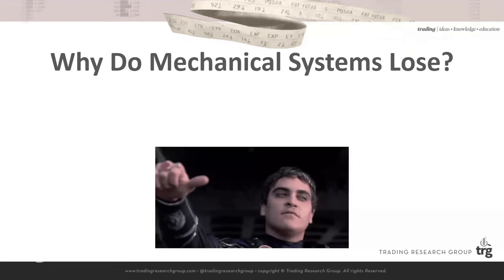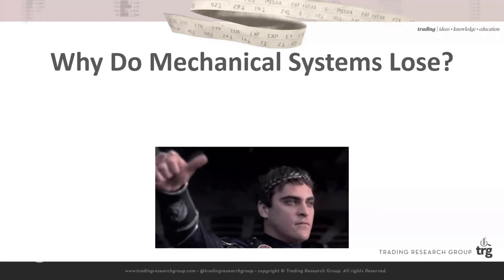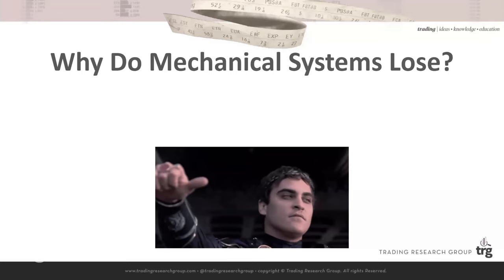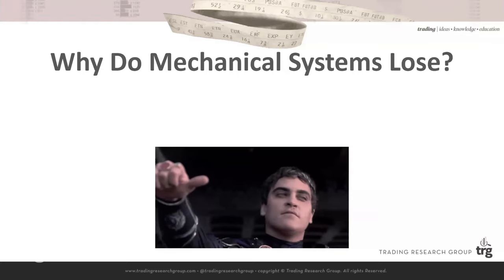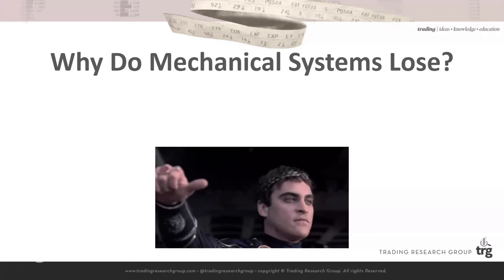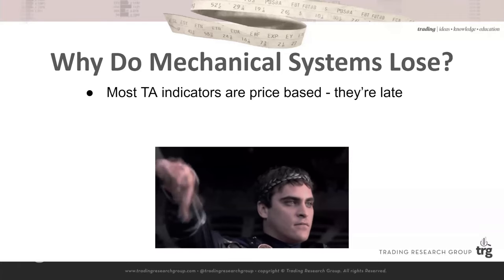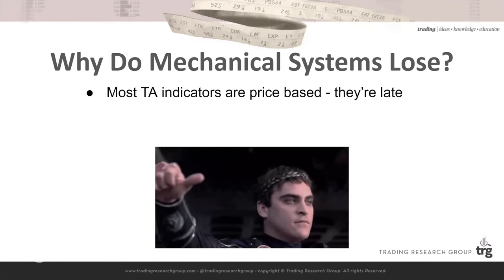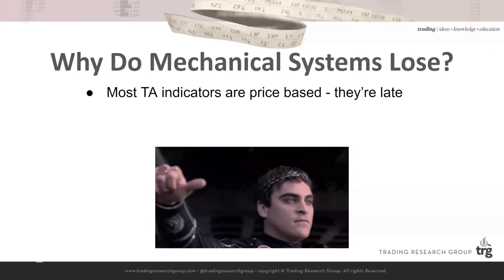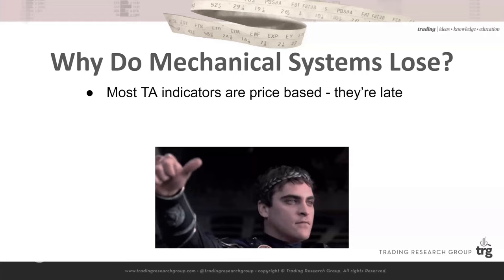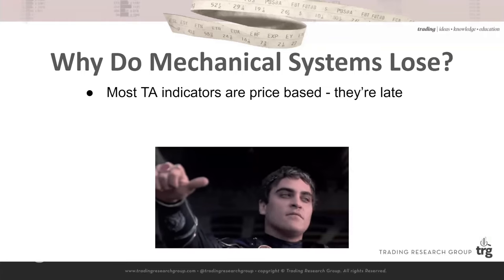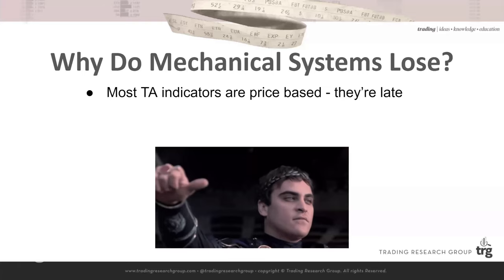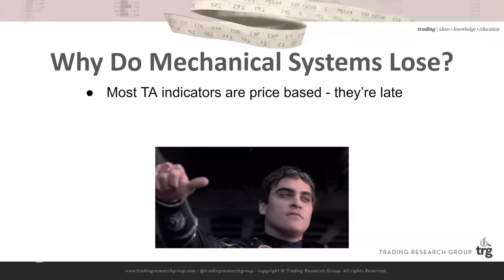Let's talk about the elephant in the room: why is it that mechanical systems always lose? Brainless, enter-when-indicator-A-crosses-indicator-B systems will always eventually ultimately lose money. One of the main reasons is that TA indicators most people use are price-based — moving averages, Fibonacci levels, pivots — all derived from price, which means they lag. They're always just showing you where price was. By the time you react to it, it's literally in the past — it's already happened. You didn't see it coming.